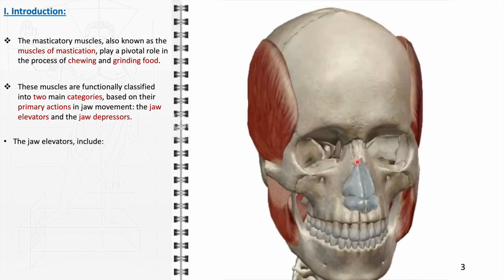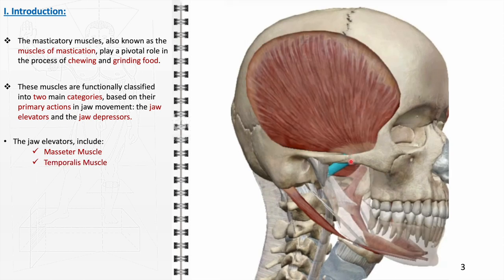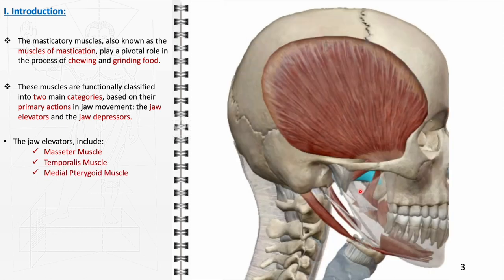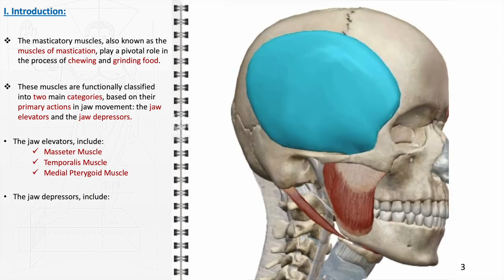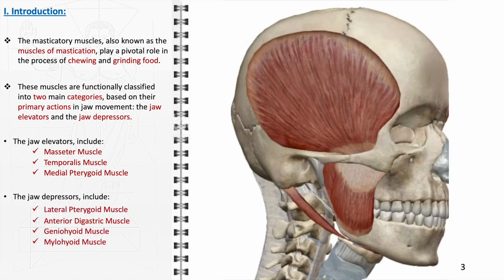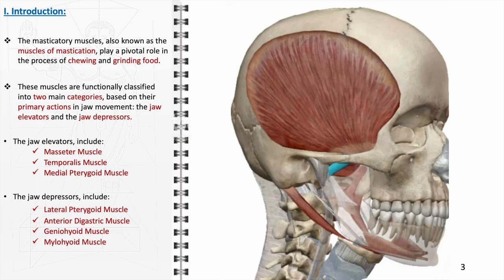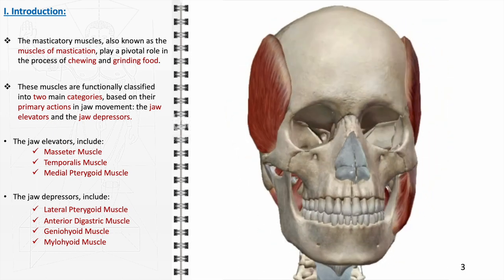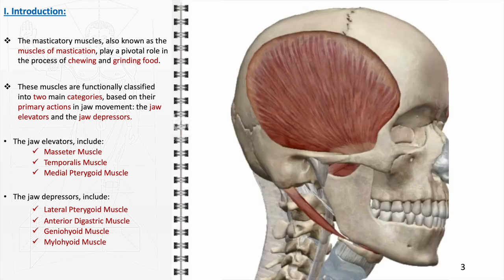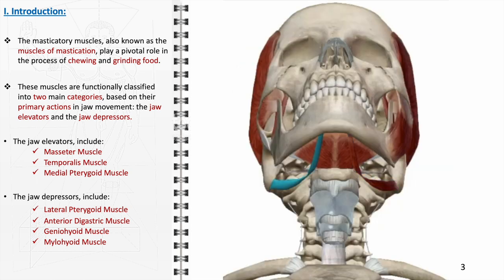The jaw elevators, which include the masseter, temporalis, and medial pterygoid muscles, are crucial for raising the jaw. The masseter, one of the strongest muscles in the human body, is vital for clenching the jaw, while the temporalis, with its fan-shaped structure, assists in both elevating and retracting the jaw. The medial pterygoid contributes to elevation and slight lateral movement. Conversely, the jaw depressors include the lateral pterygoid, and the anterior digastric, geniohyoid, and mylohyoid muscles, which aid in opening the mouth and stabilizing the jaw.